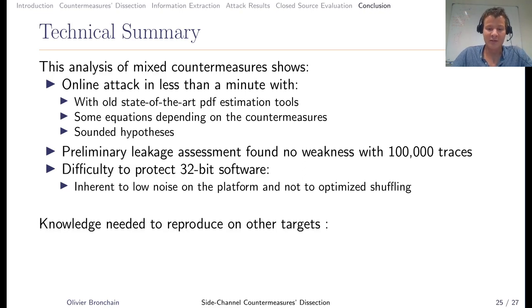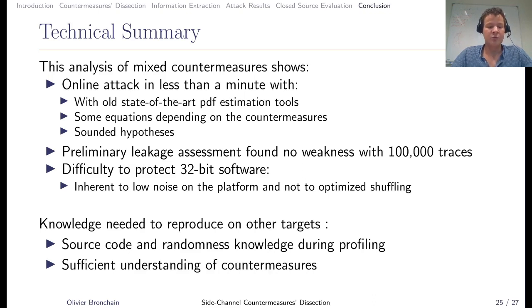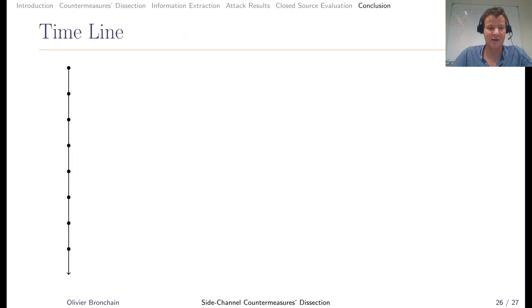To reproduce on another target, you need a few things. For sure, you need the source code, and you need to know the randomness while doing the profiling, not when doing the attack. You need to have a sufficient understanding of the countermeasures, and you do not need too much time. To illustrate that, I did a timeline of the different steps within the work.